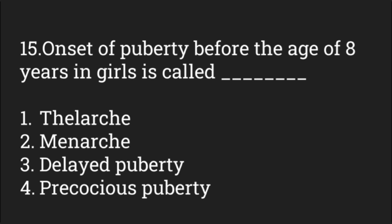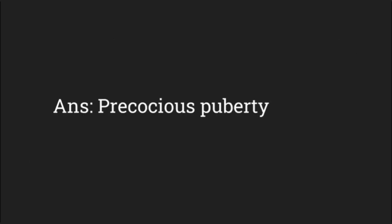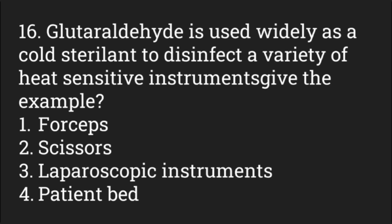Onset of puberty before the age of 8 years in a girl is called — options: thelarche, menarche, delayed puberty, precocious puberty. The answer is precocious puberty.